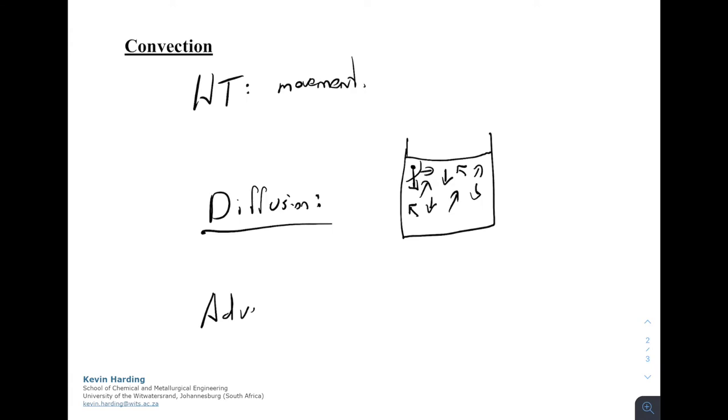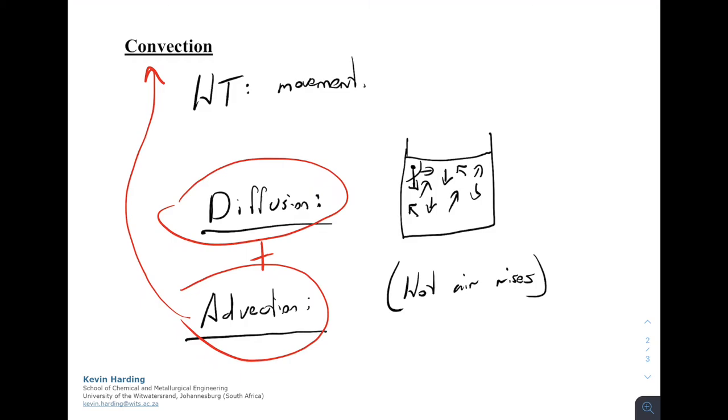The second is advection, which is the large-scale movement of currents in a fluid. Think of the philosophy that hot air rises—bulk movements, ocean currents, and things like that are advection. The sum of diffusion plus advection is convection.